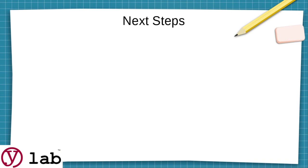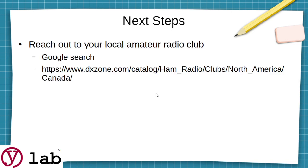Next steps. What do you do to get your license? How do you get into our material? First of all, reach out to your local amateur radio club. You can search on Google. This site, DXZone, lists most of the clubs in North America and Canada.